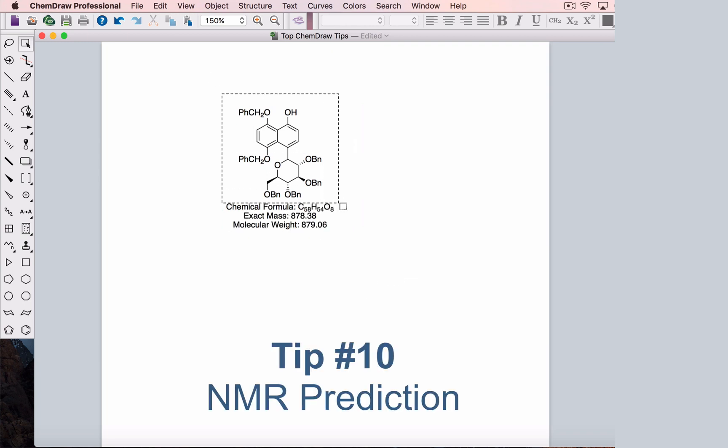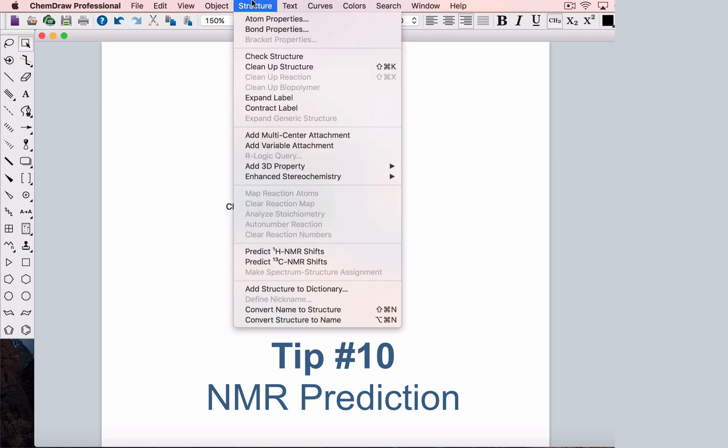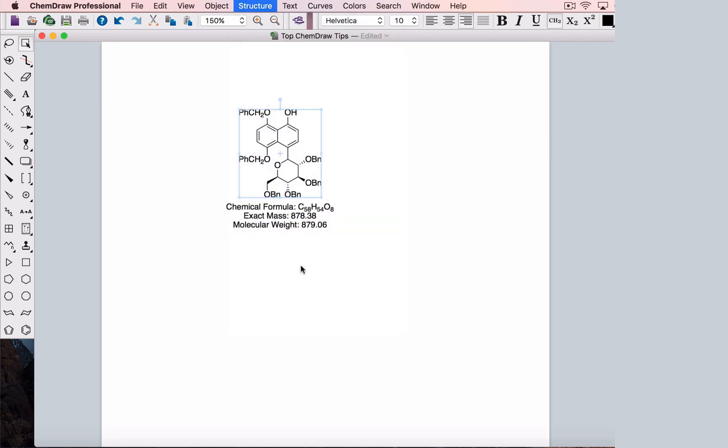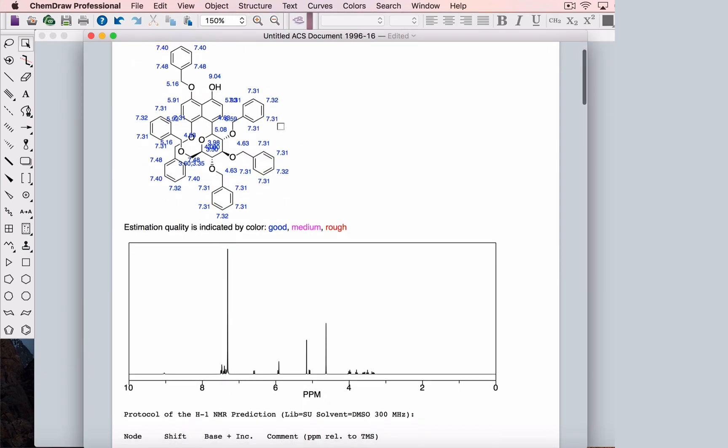Finally, wouldn't it be nice to know what to expect when we take an NMR of this compound? From the structure menu, we can generate a prediction of the NMR shifts. Now, mousing over any proton in the molecule highlights it in the spectrum and vice versa.